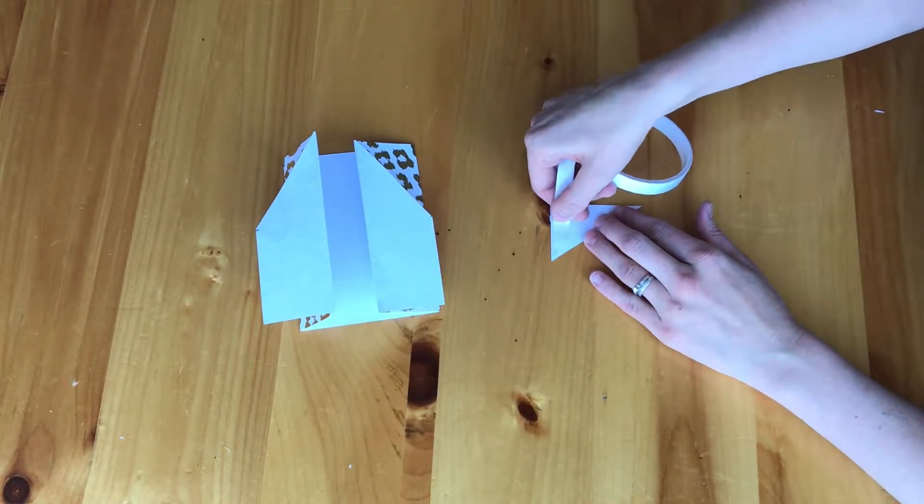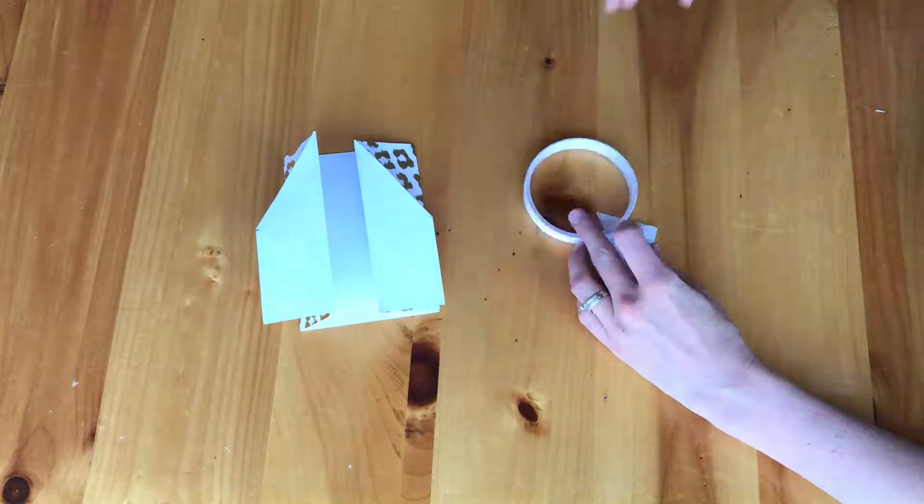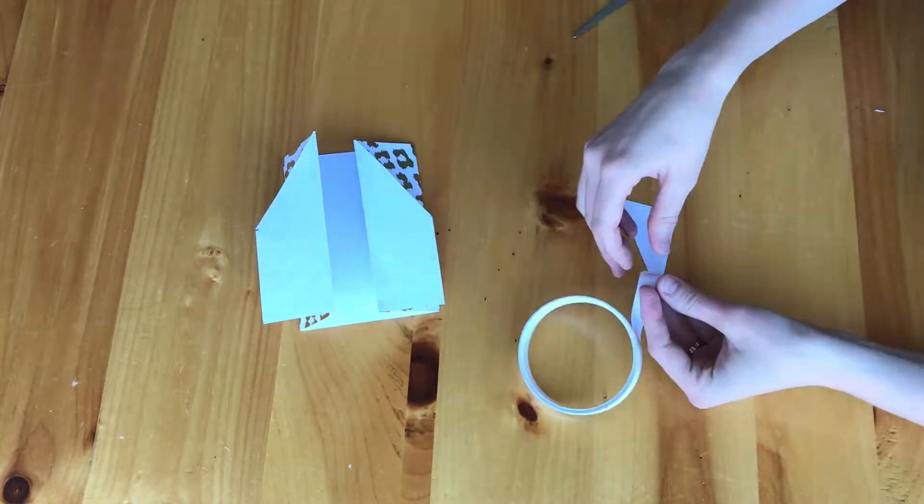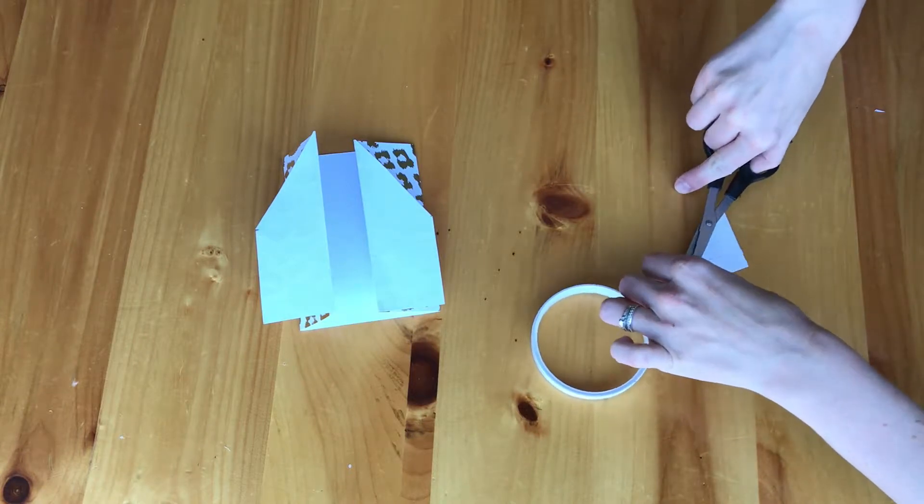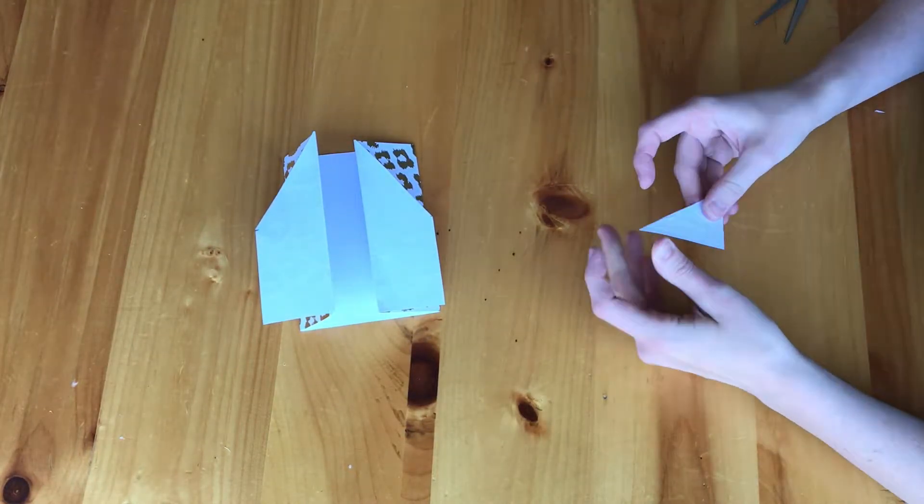you're going to take double-sided tape and you're going to put on the back of each corner and then you are going to attach each of the corners that you cut off to the bottom of the card.